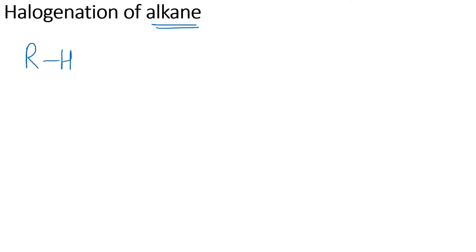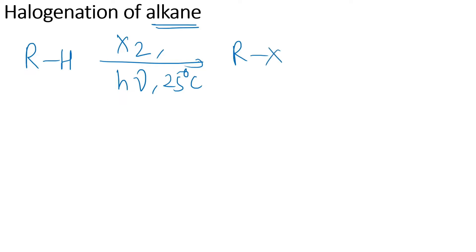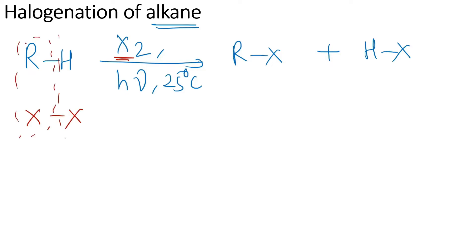This reaction is called halogenation of alkane. The reaction is: alkane + X₂ under sunlight at 25°C gives RX, and the byproduct is HX. That is the direct method. Writing X₂ as X–X, the product is RX and the byproduct is HX.